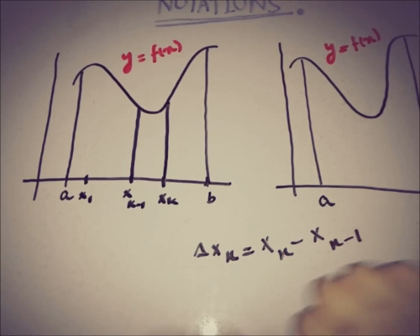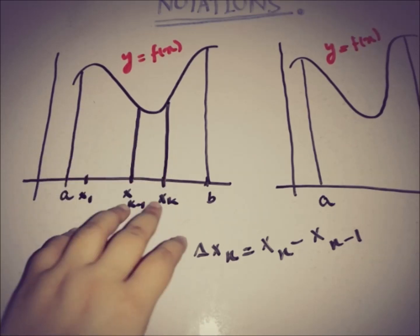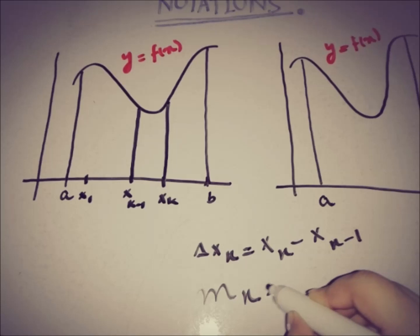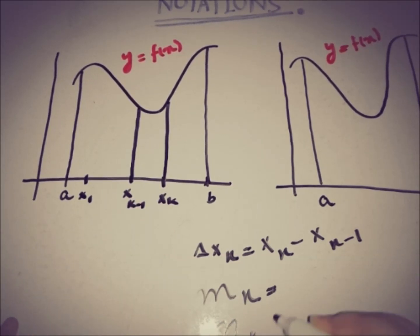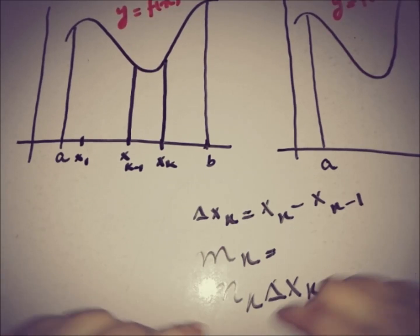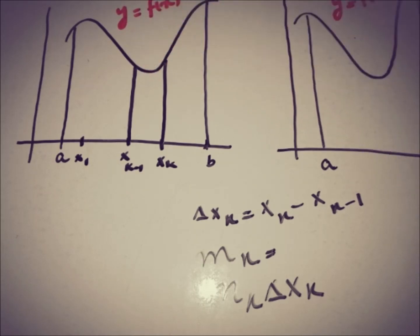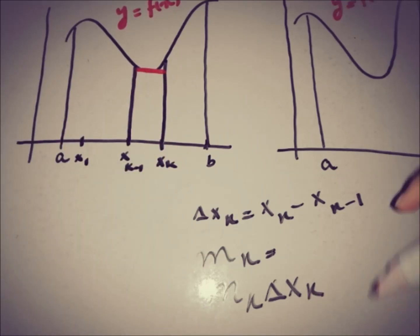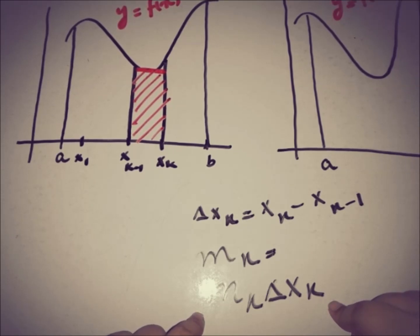We know that small m_k equals the infimum of f(x) for x taken from the k-th interval. If we multiply m_k by the interval width Δx_k, the product represents the shaded area of the rectangle for the k-th interval. So m_k · Δx_k gives the area of the rectangle corresponding to the k-th subinterval.